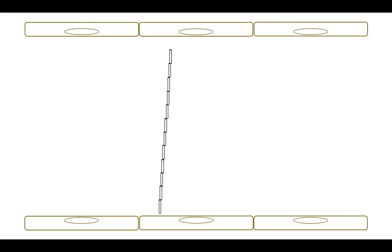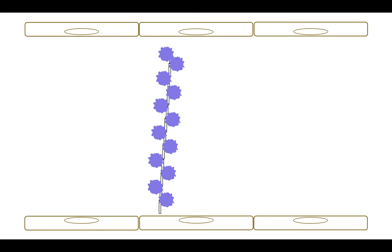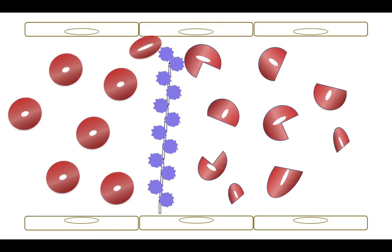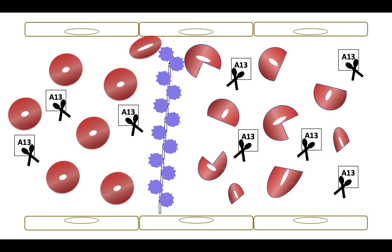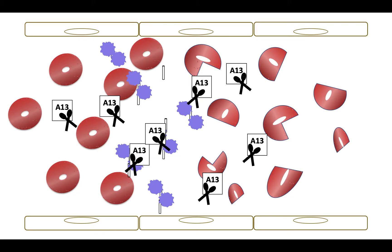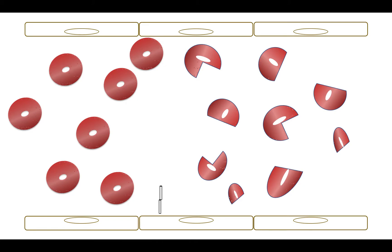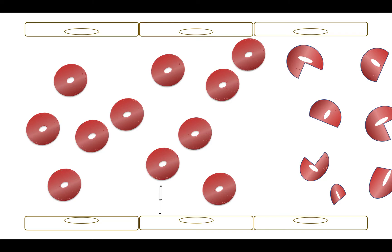The first step in acute management is to restore ADAMTS-13 activity levels. Von Willebrand factor multimers that remain uncleaved due to ADAMTS-13 deficiency allow platelets to bind and form fibrin-rich microthrombi that block arterioles and venules. Consequently, red blood cells get fragmented, forming the schistocytes seen on the peripheral blood smear. By restoring ADAMTS-13 activity, ADAMTS-13 can bind the ultra-large von Willebrand factor multimers and cleave them, removing the platelet microthrombi, resolving microvascular blockage, and freeing up the microcirculation to undamaged red blood cells.